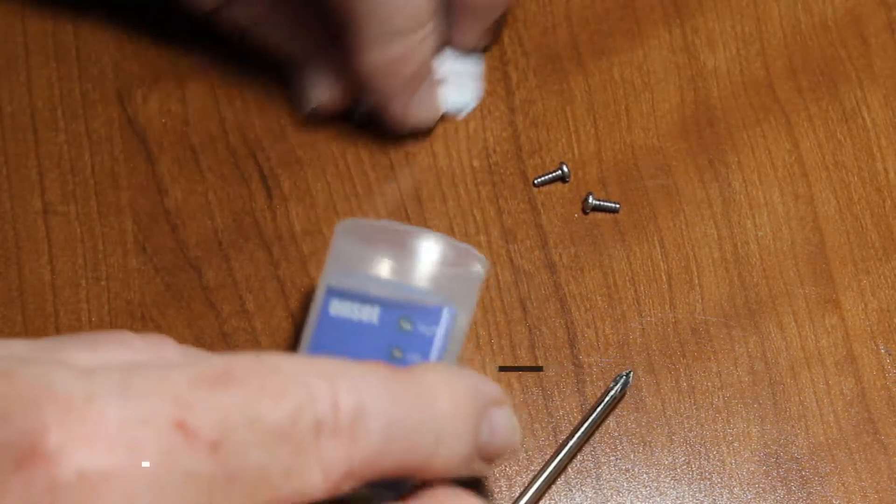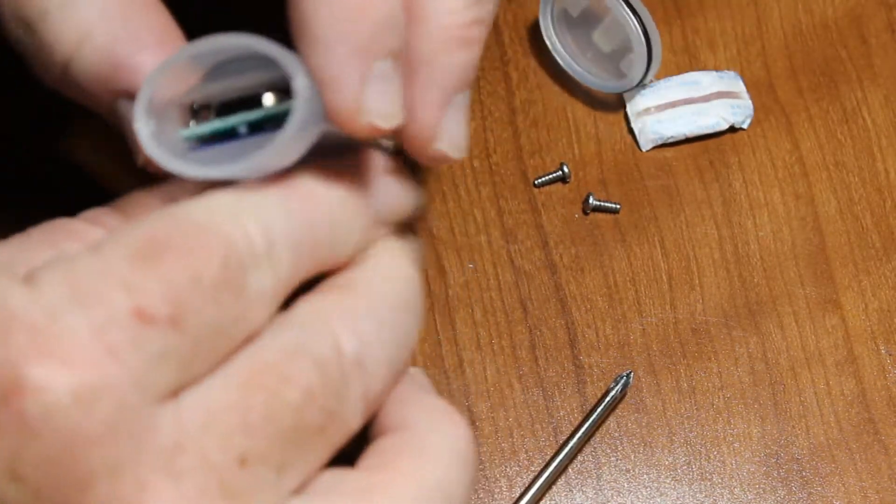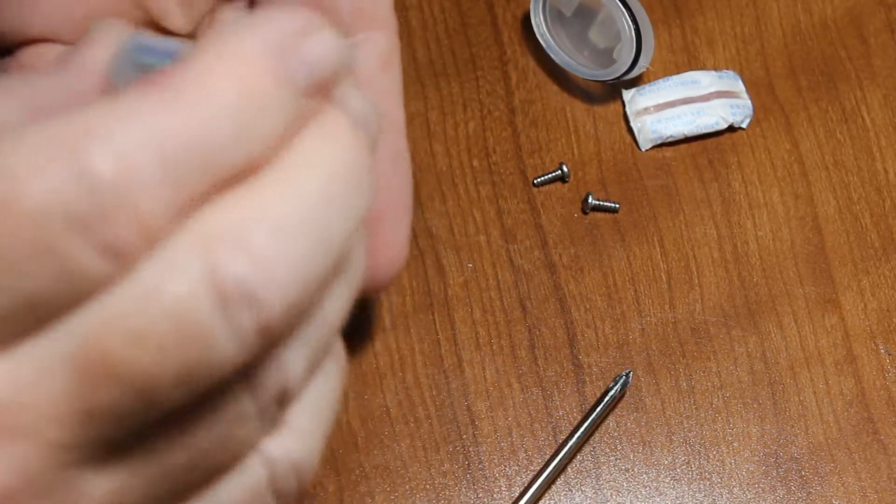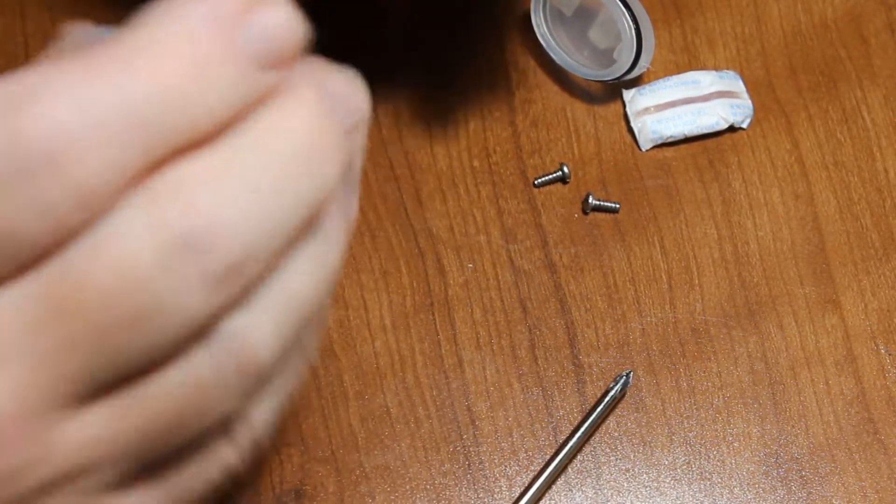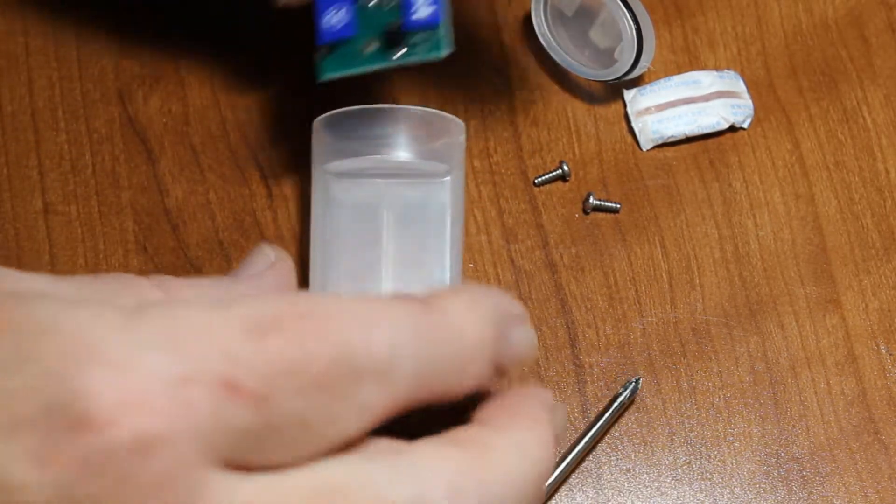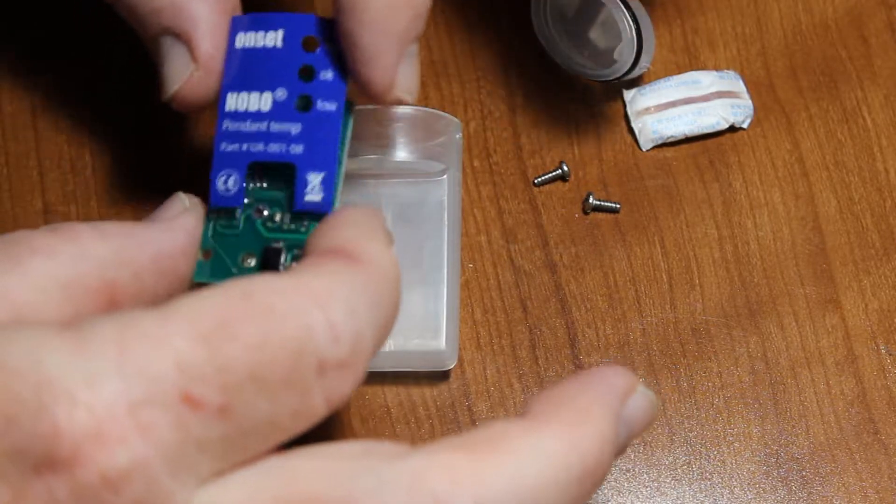So here's our pendant. And we want to take this out of the case. So just tip it upside down and give it a tap. And you'll see that the PC board and the label come out.